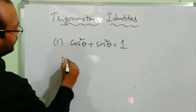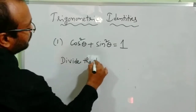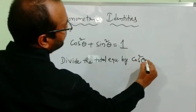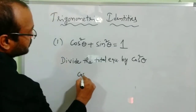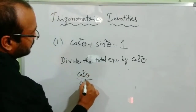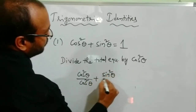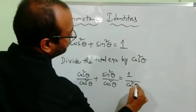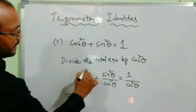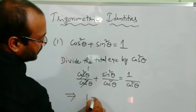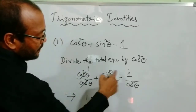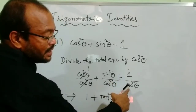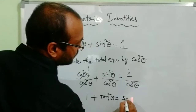First, divide the total equation by cos²θ. Then cos²θ/cos²θ + sin²θ/cos²θ = 1/cos²θ. Now cos²θ gets cancelled, this will become 1 plus sin θ/cos θ — which is nothing but tan θ — squared. So, 1 + tan²θ = 1/cos²θ. Now 1/cos is nothing but sec, so we get 1 + tan²θ = sec²θ.